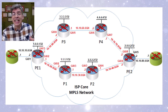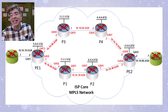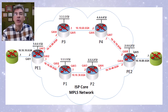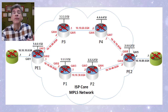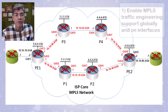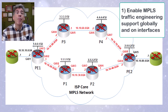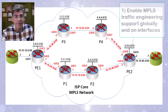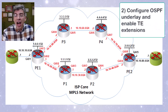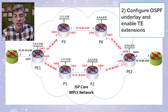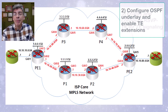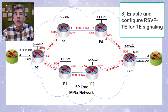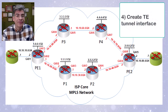For MPLS TE, we can either configure OSPF or ISIS as our underlay routing protocol. We'll be focusing on OSPF for this video. From here on, our configuration will involve the following steps: first, we'll enable MPLS traffic engineering support both globally as well as on the relevant interfaces of the P and PE routers. Then we'll configure the OSPF underlay and enable the TE extensions. We'll enable and configure RSVP TE for our TE signaling, and finally we'll create our TE tunnel interface.